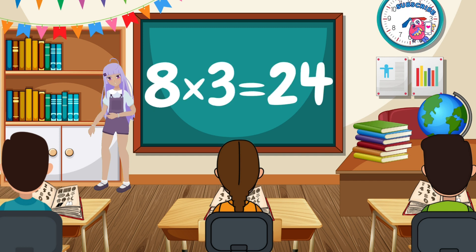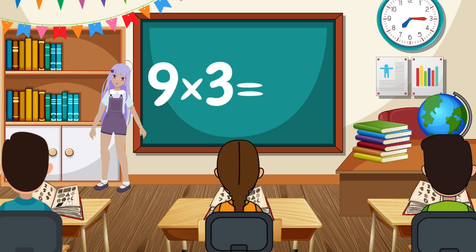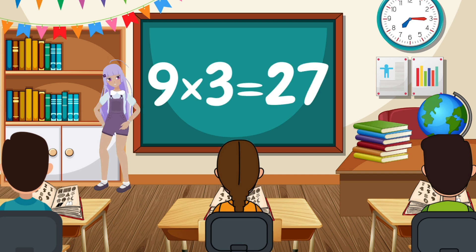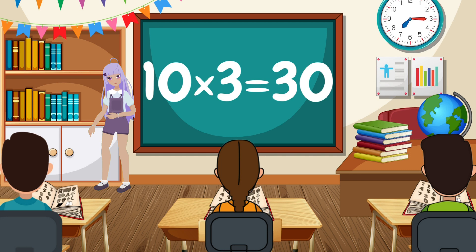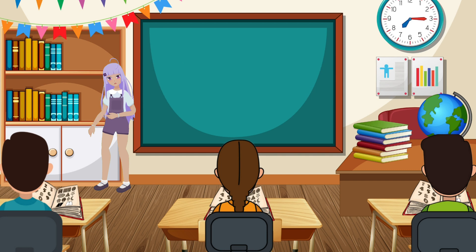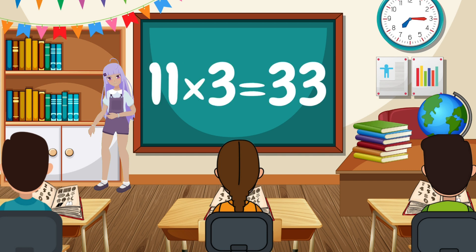9 multiplied by 3 equals 27. 10 multiplied by 3 equals 30. 11 multiplied by 3 equals 33.